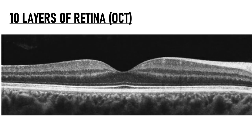These are all the 10 layers of retina as we see on the OCT. I am using this picture just so we can revise the layers of retina. Even if you are not familiar with OCTs, that will not make any difference to your understanding of this video. As we go from top to bottom, we are going from the innermost to the outermost layer of retina.